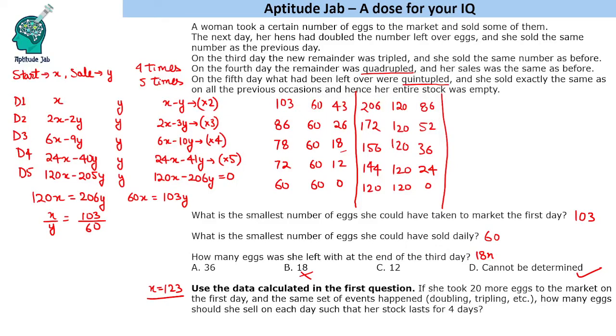How many eggs should she sell on each day such that her stock lasts for 4 days? If her stock gets empty in 4 days, that means 24x minus 41y should equal 0. We have x equals 123 and need to find y. So 41y equals 24x, which gives y as 24 times 123 divided by 41. Three times that is 72. The answer is 72. This is the solution to the set.